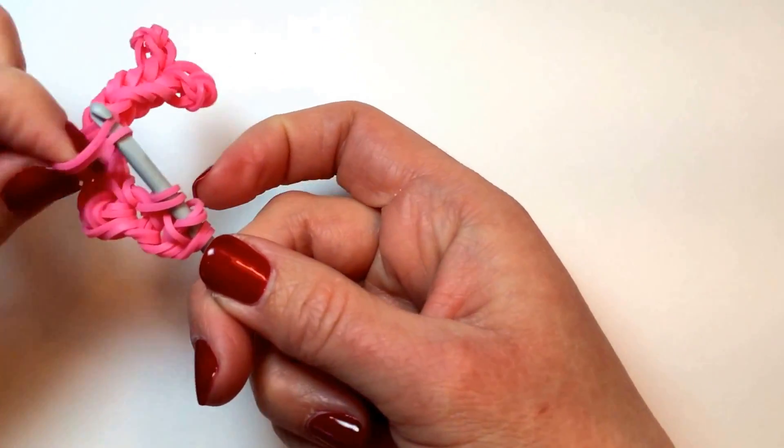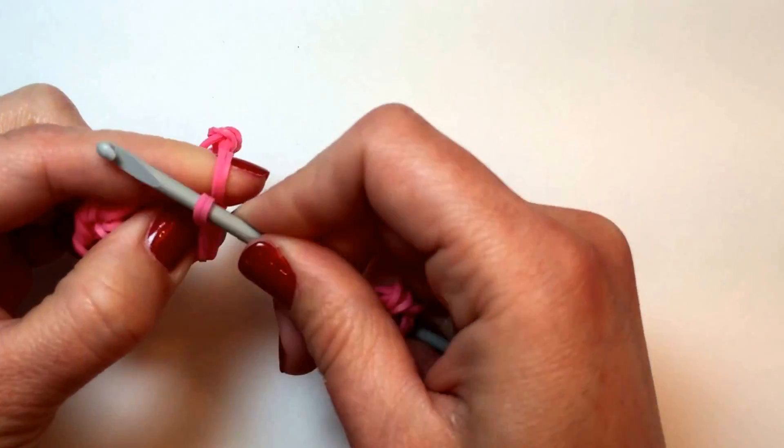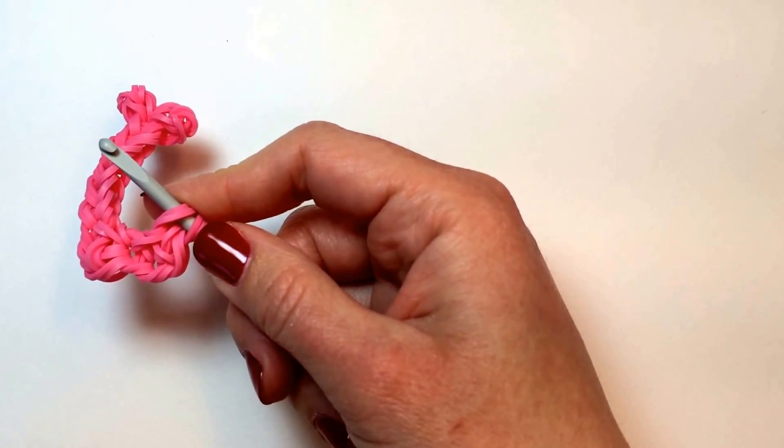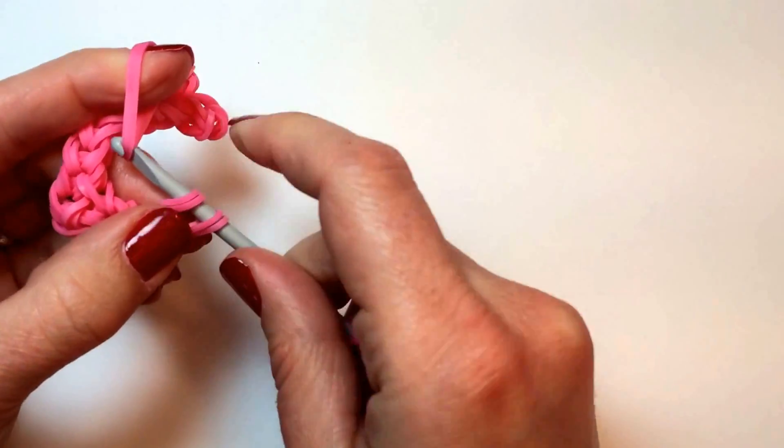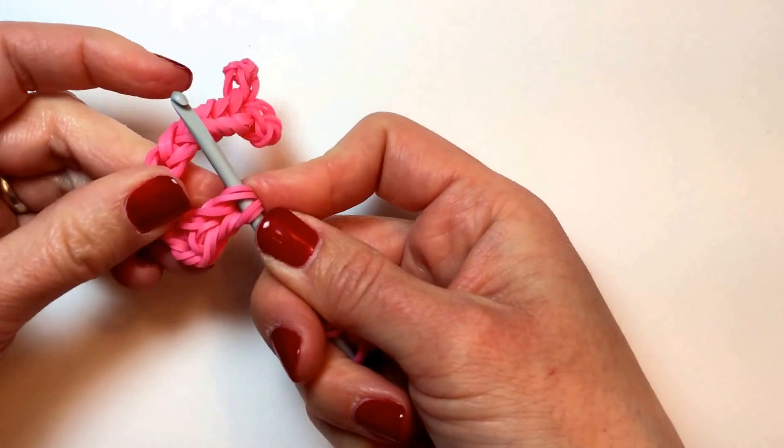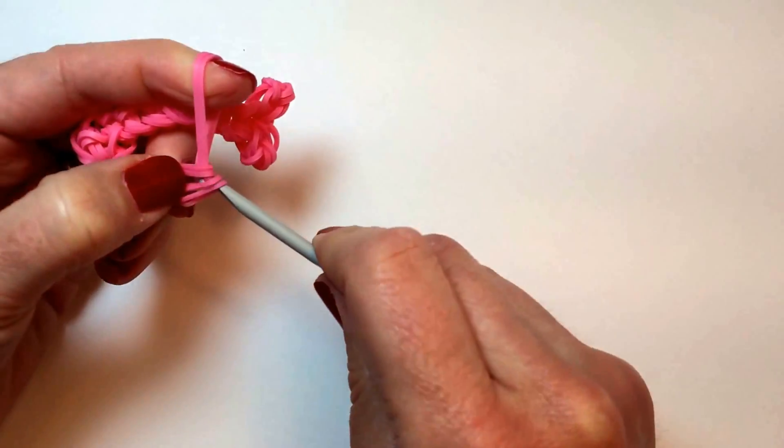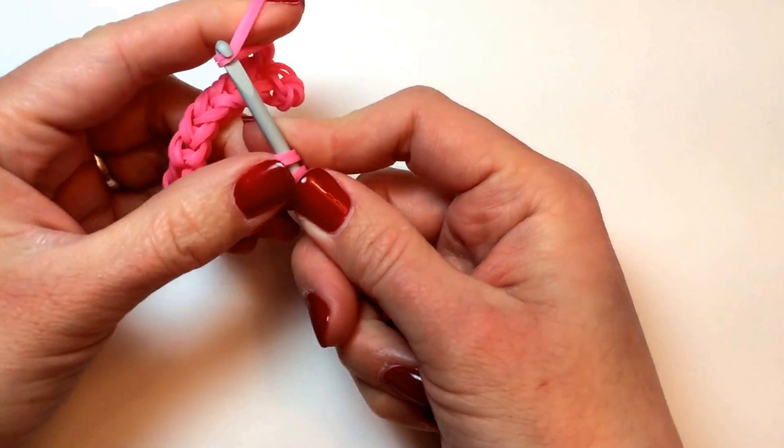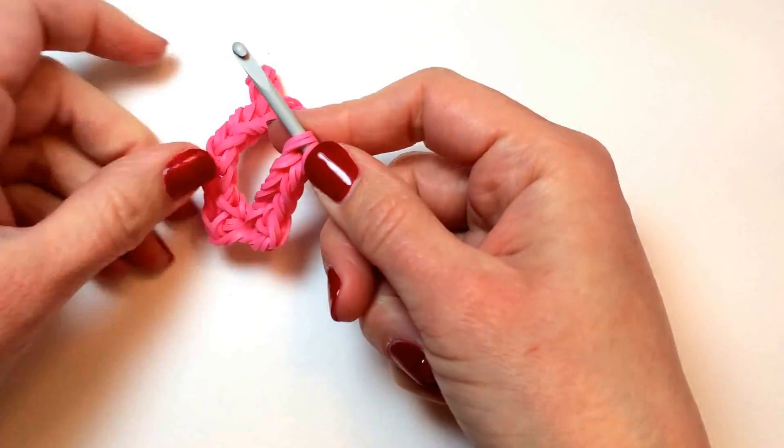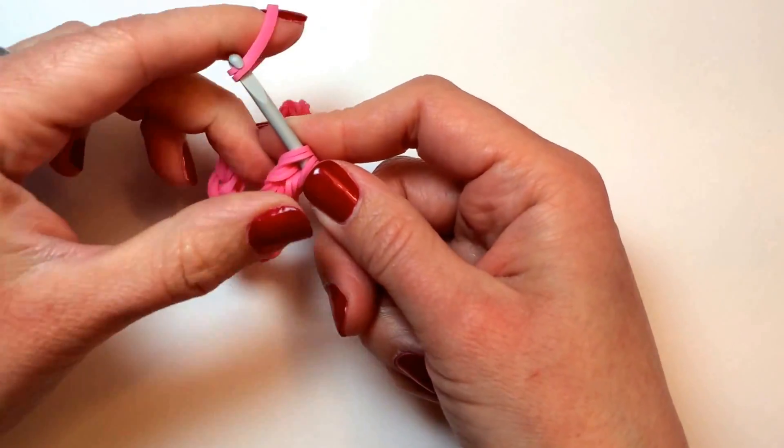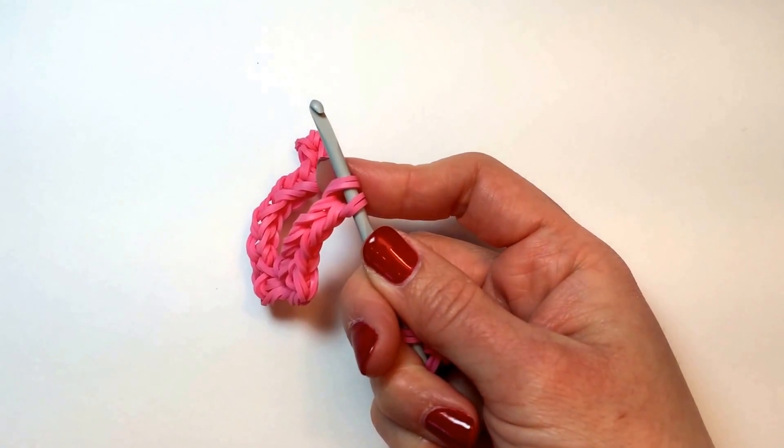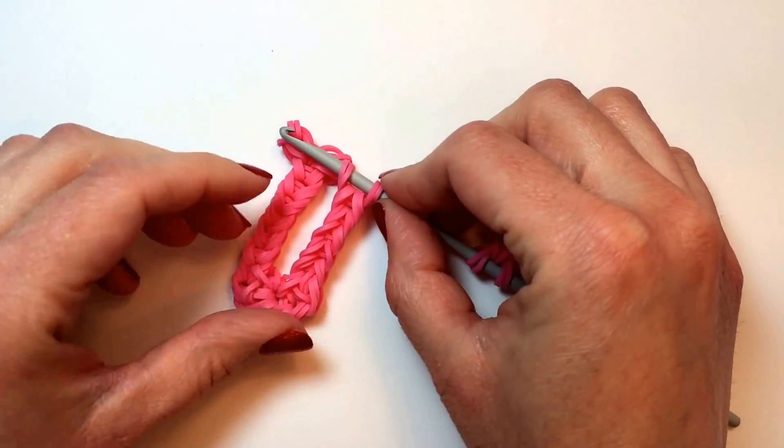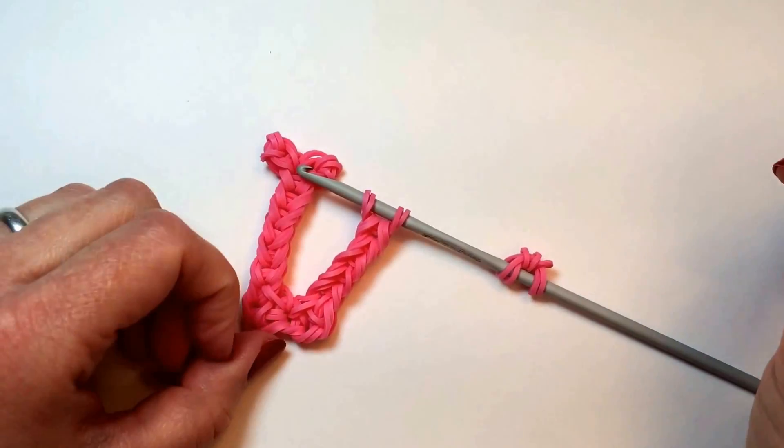And then two more bands, and we're going to keep going up five more times. And so now our two sides of the U are even and we just need to add the decorative touch at the top of our U.